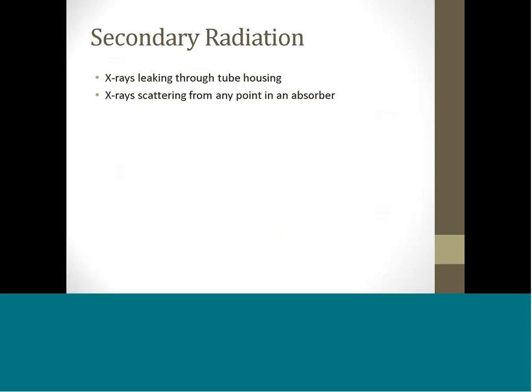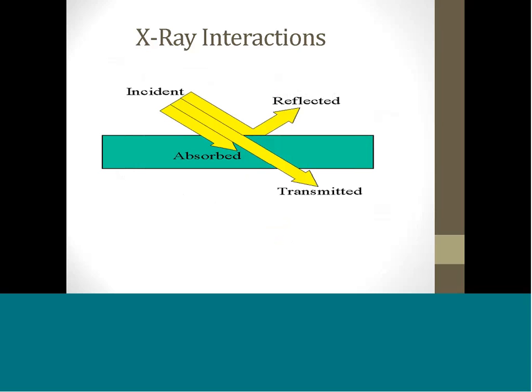X-ray tubes contain internal shielding to absorb all radiation except that of the primary beam. Some of this radiation, however, leaks through the tube's housing and generates a secondary radiation field around the tube. This slide schematically illustrates scattering, absorption, and transmission of X-rays interacting with an absorber.